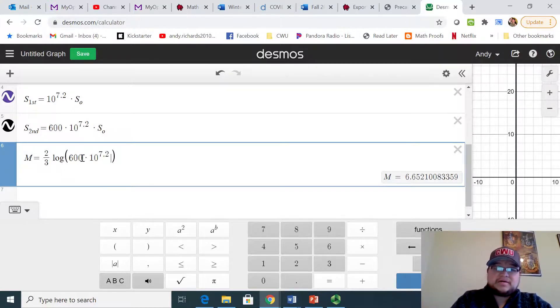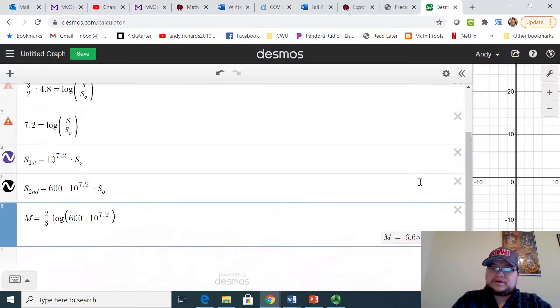We can send it through and get two thirds log, again log base 10, of this 600 times 10 to the 7.2. So it's a way to shift it when these earthquakes are so dramatic. We can still quantify it in a way that is meaningful, so the range of it isn't very dramatic.